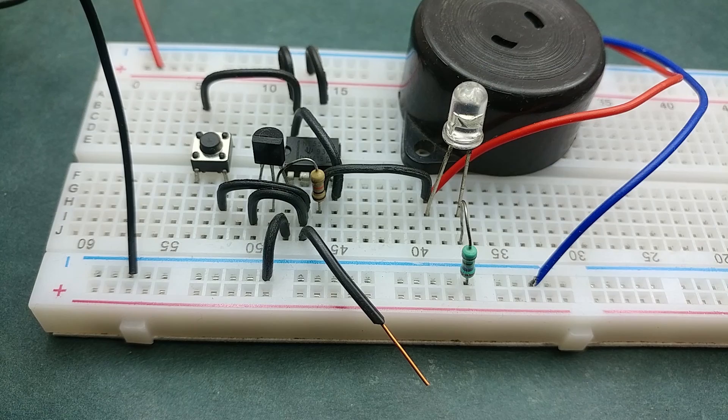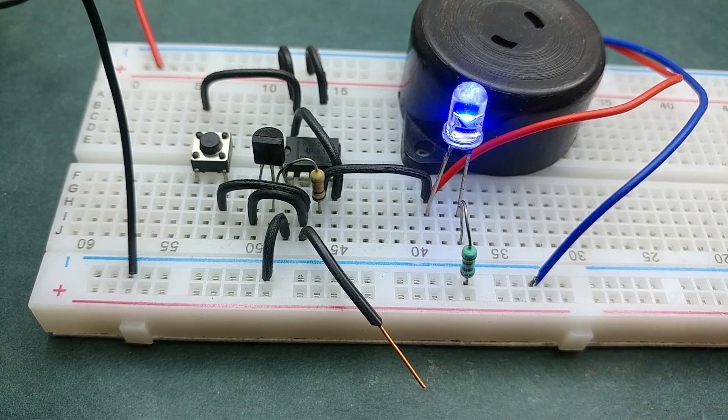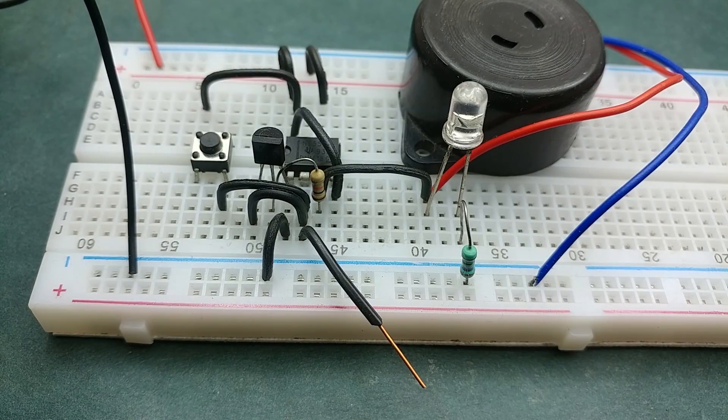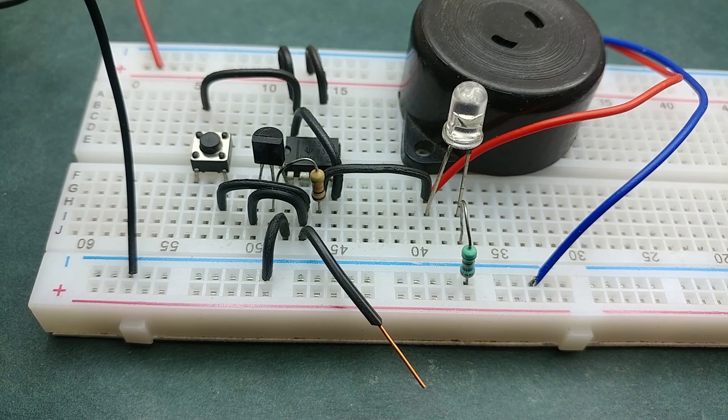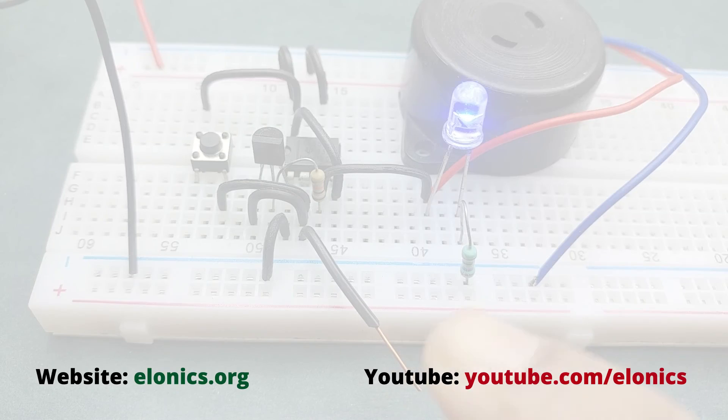In the next video, we'll use these principles along with using feedback from the output to make a touch alarm circuit where a buzzer turns on whenever the touch wire gets in contact with any object with negative charge.